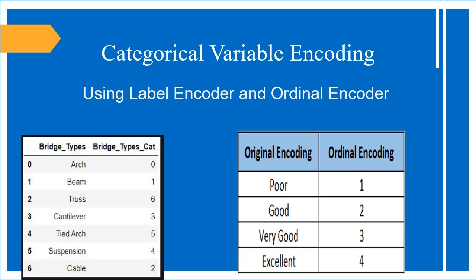Nominal variables are those variables which are having classes present inside them. For example, if you look at this column — bridge type — you can see classes like arc, beam, and so on. These are different classes which you cannot measure. We cannot define which is greater or not greater. Columns which cannot be measured like this are known as nominal columns.